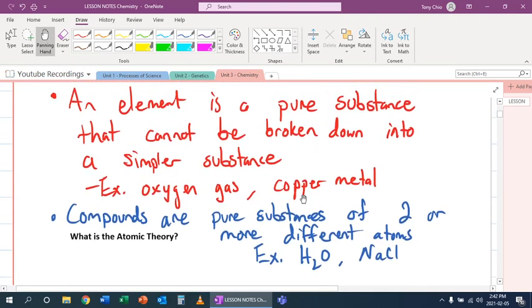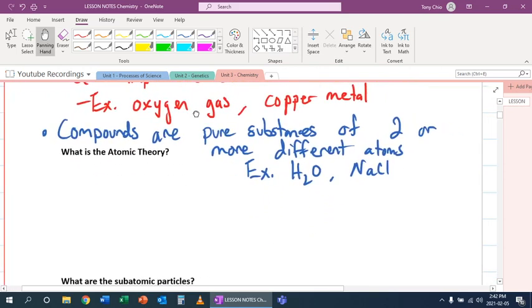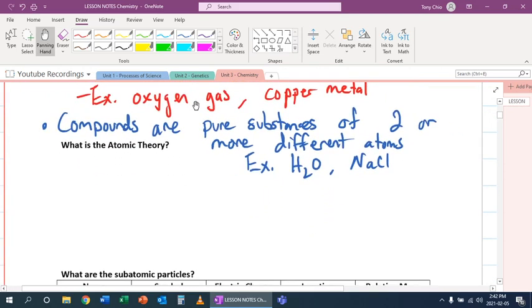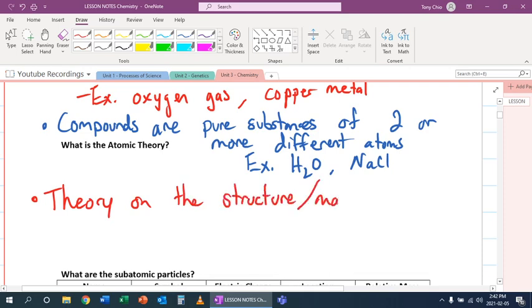Now, some of you might go, well, can we break down these elements some more and get our electrons, protons, and neutrons? Yes, but they're no longer substances. Those things are not what we call substances. Then what is the atomic theory, then? The atomic theory is basically a theory on the structure and makeup of an atom.